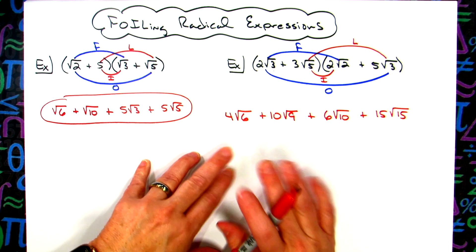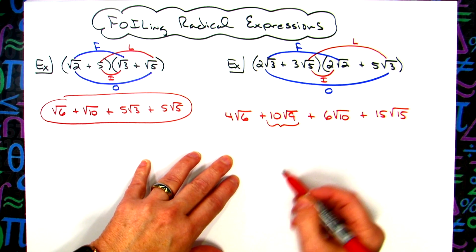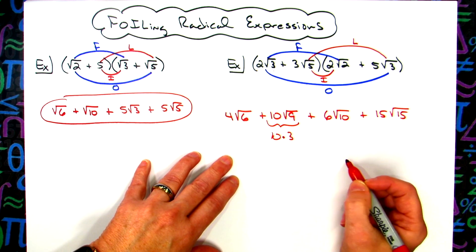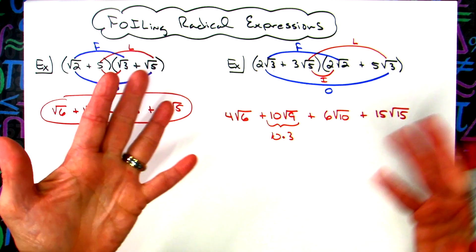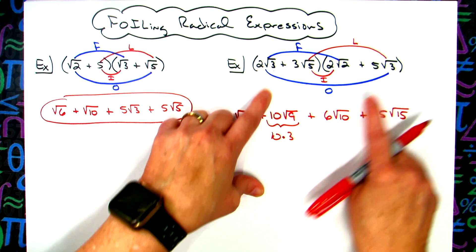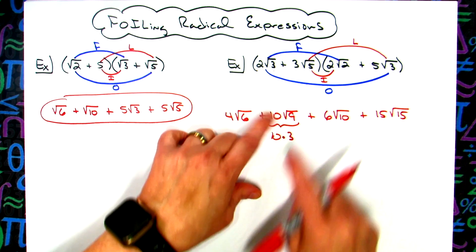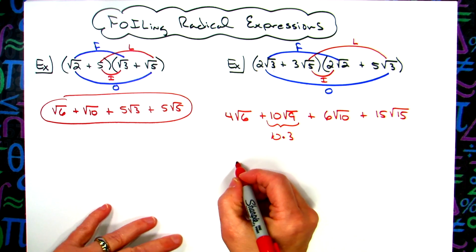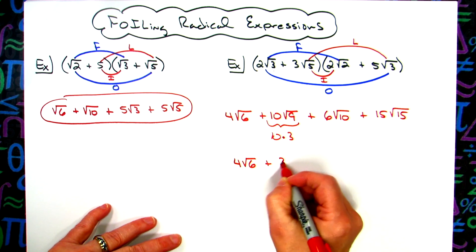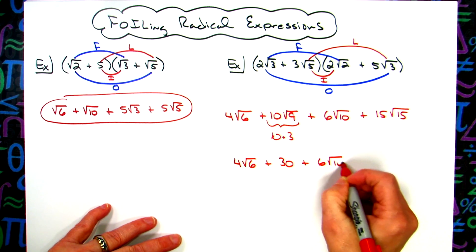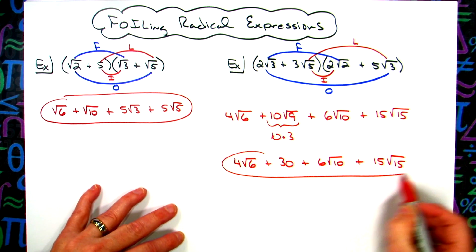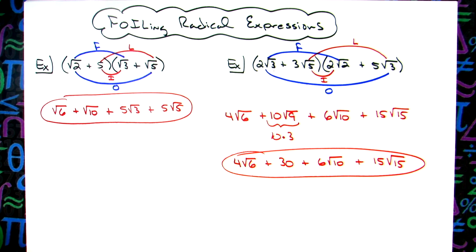Now check each one — I cannot simplify three of them. But the square root of nine simplifies to three, so that term becomes 10 times 3, which is 30. Worth noting: square root of three times square root of three will always give you three, because three times three is nine. So writing out the final answer: four square root of six plus 30 plus six square root of ten plus 15 square root of 15. Nothing to combine — no like radicals.